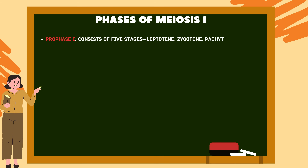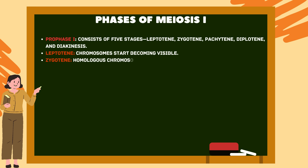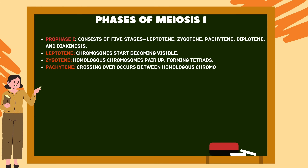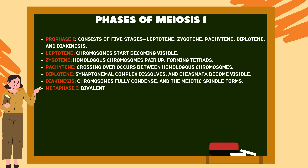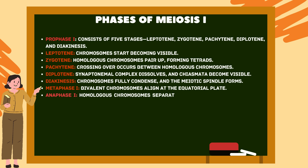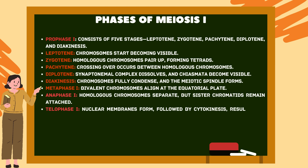Phases of meiosis I: Prophase I consists of five stages — leptotene, zygotene, pachytene, diplotene and diakinesis. Leptotene: chromosomes start becoming visible. Zygotene: homologous chromosomes pair up, forming tetrads. Pachytene: crossing over occurs between homologous chromosomes. Diplotene: the synaptonemal complex dissolves and chiasmata become visible. Diakinesis: chromosomes fully condense and the meiotic spindle forms.